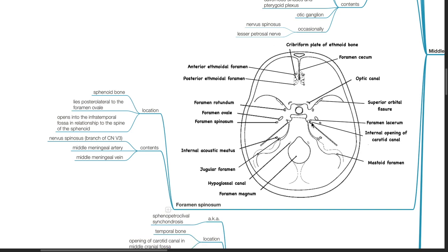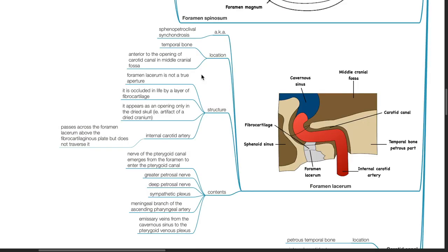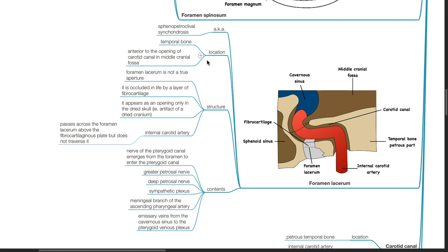The foramen lacerum, also known as the sphenopetroclival synchondrosis, is located in the temporal bone anterior to the opening of the carotid canal in the middle cranial fossa. Foramen lacerum is not a true aperture — it is occluded in life by a layer of fibrocartilage and appears as an opening only in the dried skull, i.e., it is an artifact of the dried cranium. The internal carotid artery passes across the foramen lacerum above the fibrocartilaginous plate but does not traverse it. Contents include the nerve of the pterygoid canal, the greater petrosal nerve, deep petrosal nerve, sympathetic plexus, meningeal branch of the ascending pharyngeal artery, and emissary veins from the cavernous sinus to the pterygoid venous plexus.